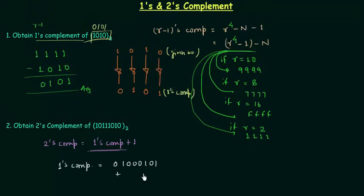And then we have to add 1. 1 plus 1 is 0 with carry equal to 1. 1 plus 0 is 1. Then we have 100010. So this is the 2's complement of the given number. This is our answer.